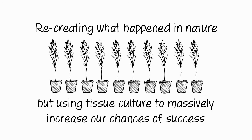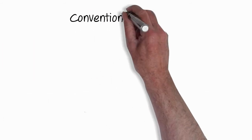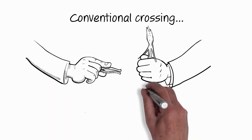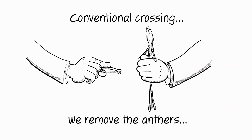They could have good effects, they could have bad effects. This is conventional crossing and what I mean by that is that we remove the anthers, which is the male part of the plant which produces the pollen.